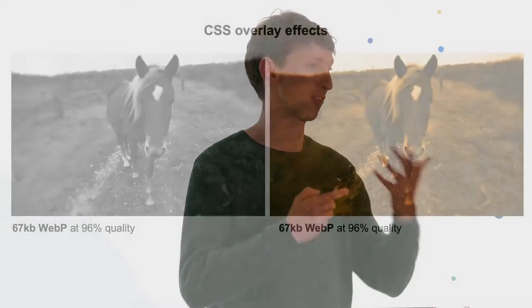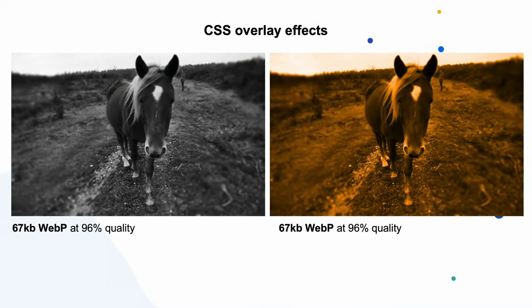Even if an image is black and white, you can add color back with CSS overlay effects without changing the image file size at all. This also allows you to create visual interactions that add life without making things flat. A WebP file at 96% quality — essentially almost no compression — gets us to 67 kilobytes from what started as a 1.2 megabyte JPEG, and it looks basically the same.